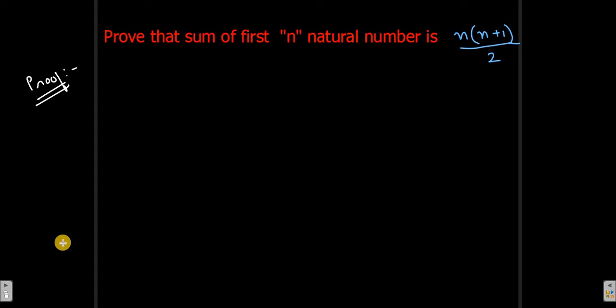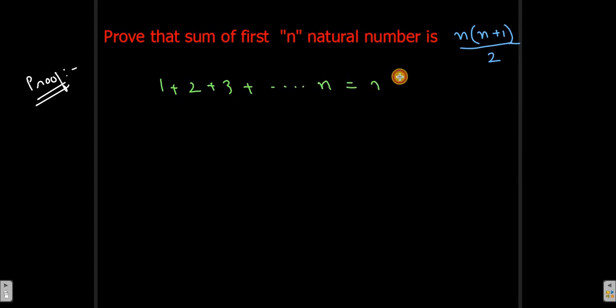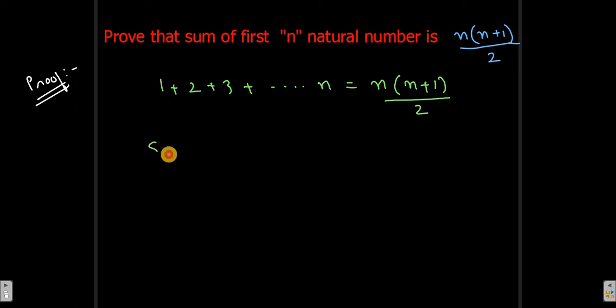In this video we're going to talk about how we can prove that the sum of first n natural numbers is n(n+1)/2. That is, if we add 1 + 2 + 3 up till n, that will give us n(n+1)/2. That is exactly the thing that most of us know, but how can we prove this?